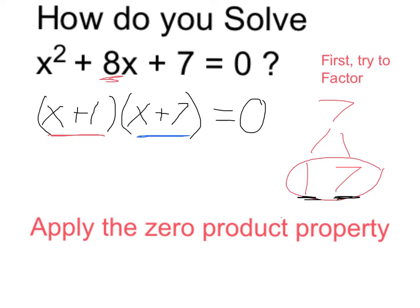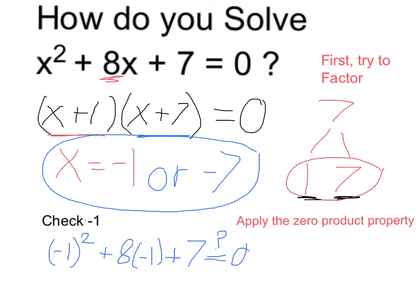x plus 1 is equal to 0 if x itself is equal to negative 1, because negative 1 plus 1 is equal to 0. x plus 7, similarly, is equal to 0 if x itself is equal to negative 7. So I'm proposing that these are my two possible solutions: either negative 1 or negative 7.